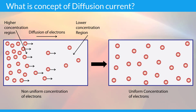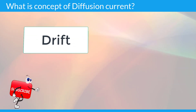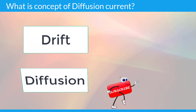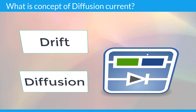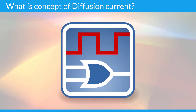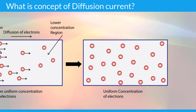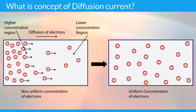In p-type semiconductor the diffusion process occurs in a similar manner. Both drift and diffusion current occur in semiconductor devices. Diffusion current occurs without an external voltage or electric field applied. Diffusion current does not occur in a conductor. The direction of diffusion current is opposite to that of the drift current.